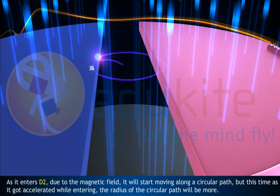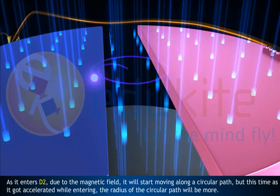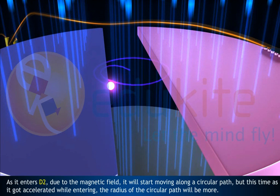As it enters D2 due to the magnetic field, it will start moving along a circular path. But this time, as it got accelerated while entering, the radius of the circular path will be more.